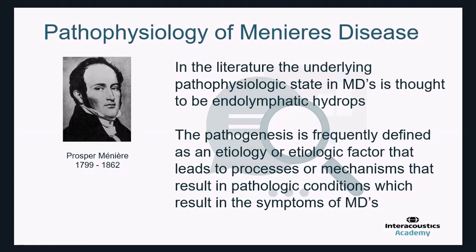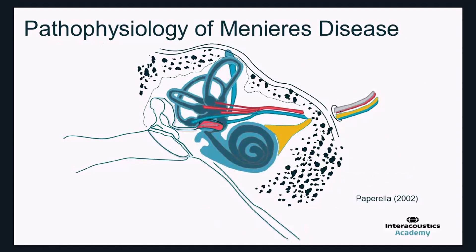The literature underlying the pathophysiology of Ménière's disease really comes down to endolymphatic hydrops. However, the trigger that may cause endolymphatic hydrops is not that well understood. The etiology — the trigger that creates the process resulting in endolymphatic hydrops and subsequently the symptoms of Ménière's disease — is, even to this day, somewhat difficult to fully understand. Reports going back to Schuknecht's original theory relate to mixed mechanical and chemical mechanisms and endolymphatic hydrops.